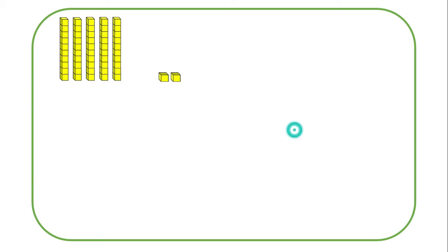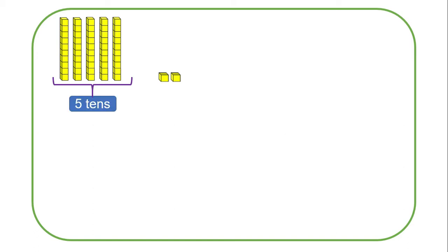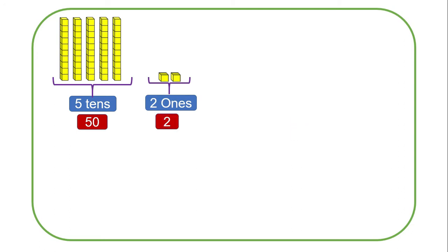Now we have got five blocks of tens and two blocks of ones. If we have five blocks of tens, it means that we have got five tens, and five tens is the same as 50. Then two blocks of ones is the same as two.